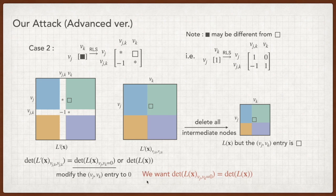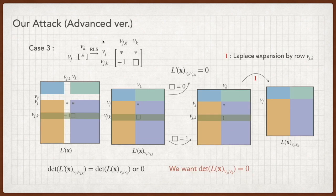In the third case, when we compute Vs VJK minor, the row VJK has at most one non-zero entry. So, if the entry equals 0, the minor should be 0. Else, if the entry is 1, we can do Laplace expansion by row VJK, which is equal to deleting row VJK and column VK.